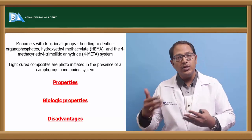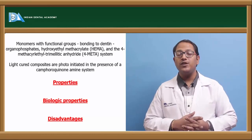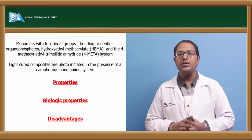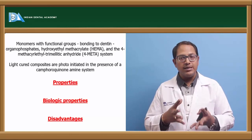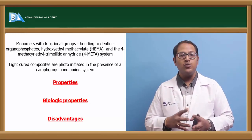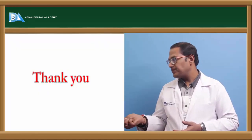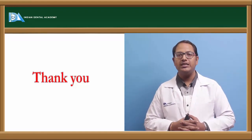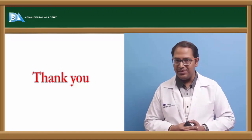Indications for resin cements include aesthetic restorations — it is the cement of choice due to its translucency — including resin composites, all-ceramic and fiber-reinforced inlays, onlays, crowns and veneers, cementation of posts into implant bodies as abutments, and situations where preparation lacks proper retention. These are all the luting cements used today, with resin-modified cement being one of the most important emerging luting agents.